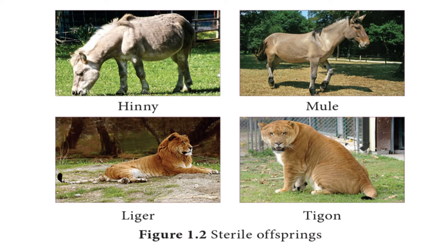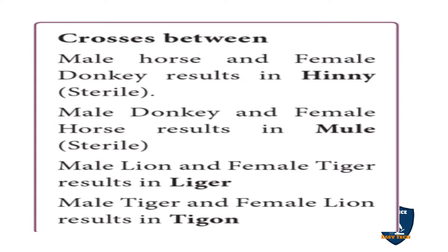A Liger resembles a lion and is a combination of tiger and lion. Tigon is a combination of lion and tiger. Mule is a combination of horse and donkey. A cross between a male horse and a female donkey results in a Hinny, which is sterile.